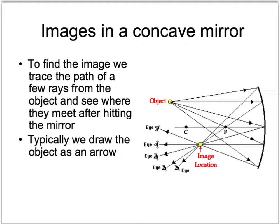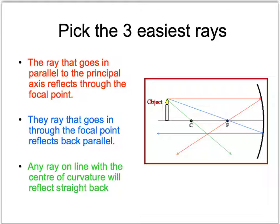There are billions of different rays leaving an object in all directions, but where they meet is where the image actually occurs. We don't want to draw all these rays, so we pick a few rays that are really easy — ones we always know where they're going to go. Wherever those rays meet up, that must be where all the rest meet up. The first easy ray: a ray going in parallel to the principal axis always comes back through the focal point — that's the red arrow. It always goes in parallel and out through F.